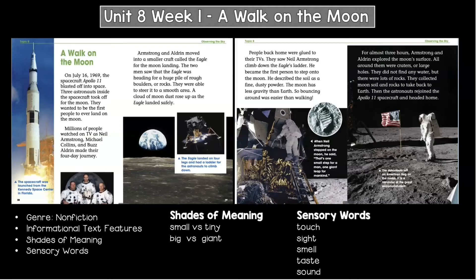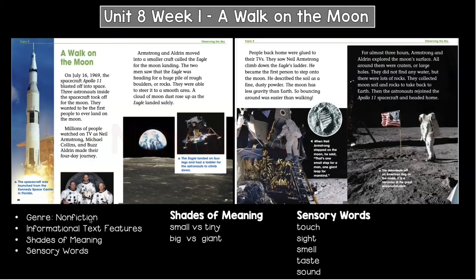We call that genre nonfiction when it is about something that is true or something that really happened. We also know that the story was trying to teach us information, and when a story is an informational text, we often see these things: we see photos, we see captions. An author also picks their words carefully — they pick words that show exactly what they mean.